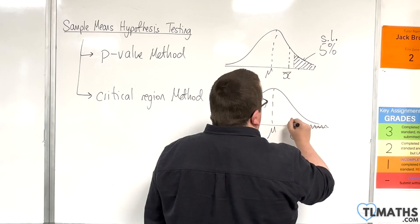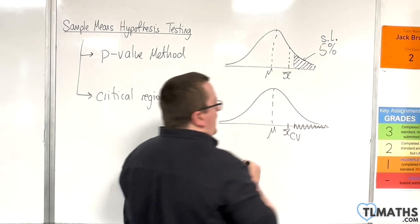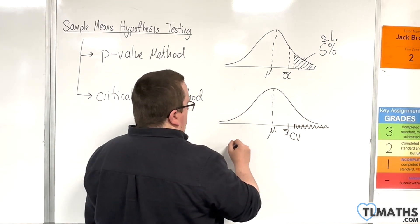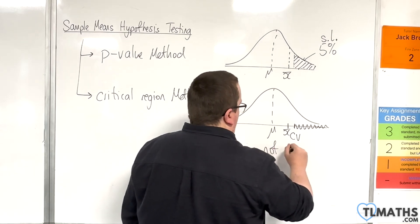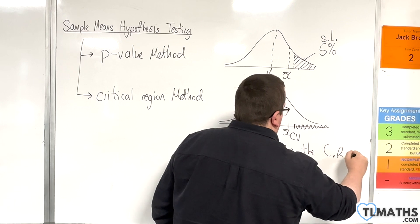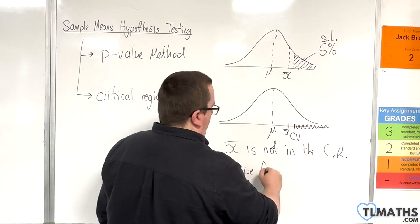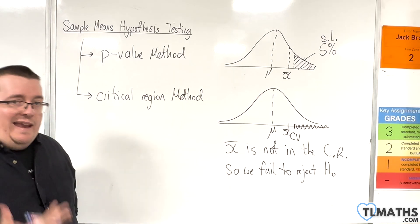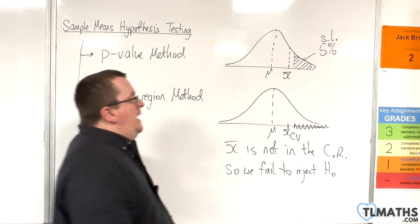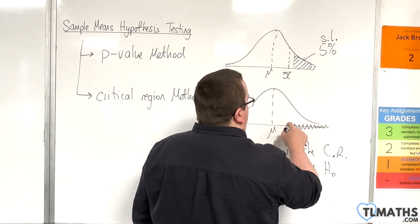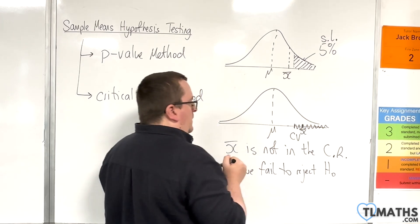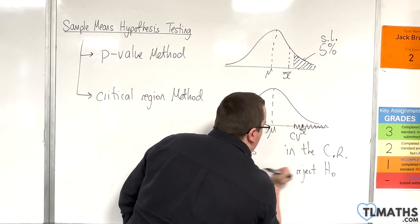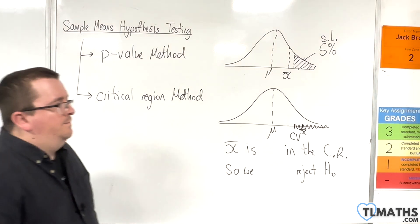If your x-bar is here, to the left of the critical value, then it's not in the critical region. So, x-bar is not in the critical region, so we fail to reject H0. x-bar is less than the critical value. If, instead, x-bar was here, then x-bar is in the critical region, so we reject H0.